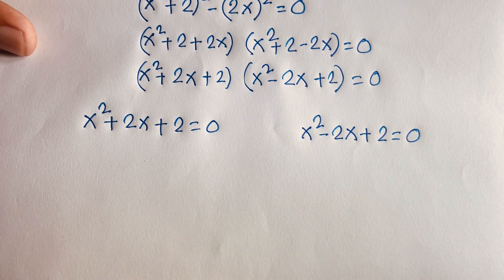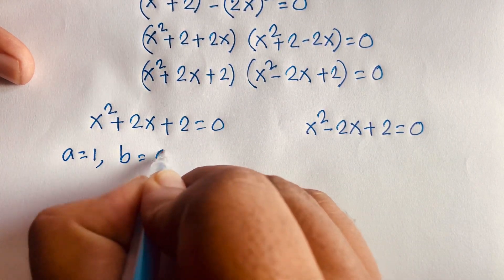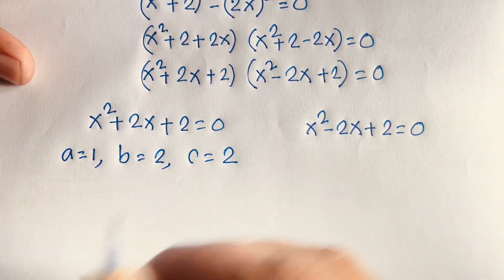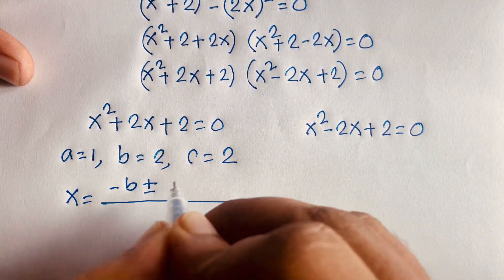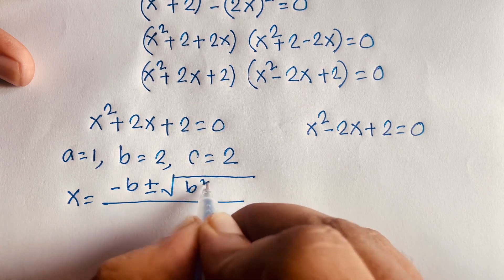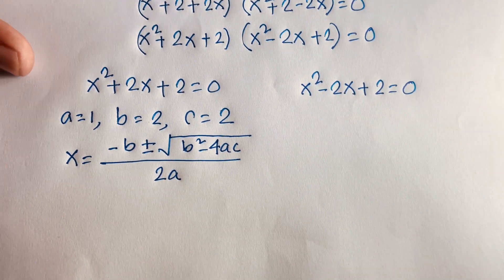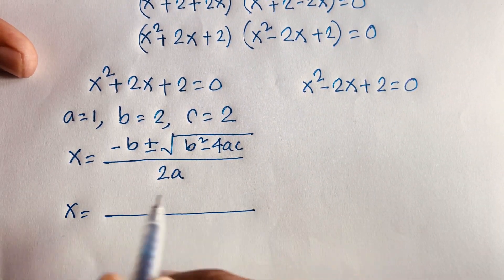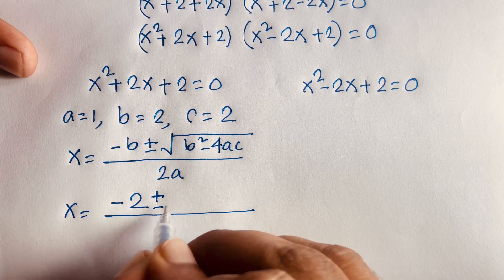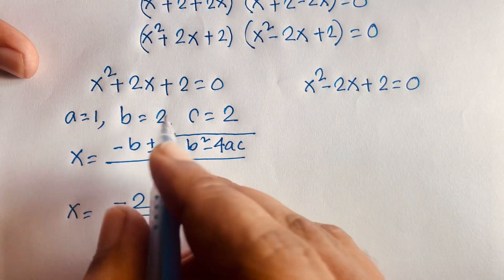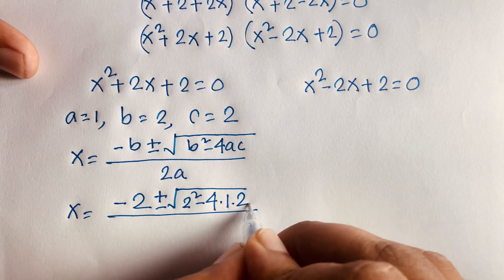For Case 1, a = 1, b = 2, c = 2. Using the quadratic formula x = (-b ± √(b² - 4ac)) / 2a, this gives x = (-2 ± √(4 - 4·1·2)) / 2.